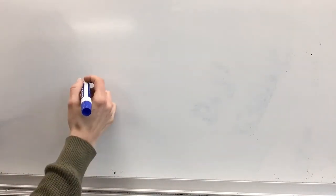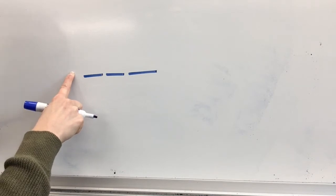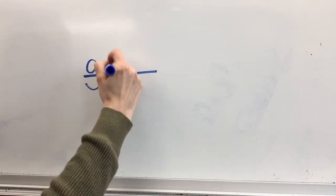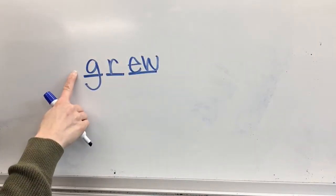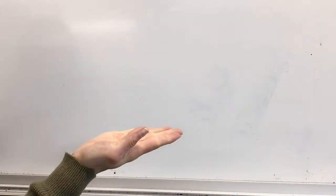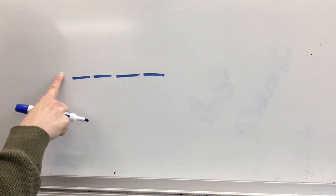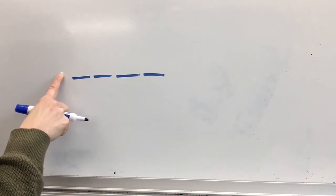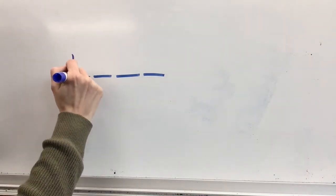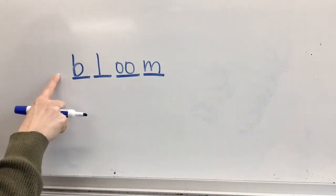Your next word is room. What word? Room. Stretch the sounds you hear in room: r-oo-m. Write your sound spellings for room. Check your word. Spell room: R-O-O-M. Word: room. Yes, room. Your next word is grew. What word? Grew. Stretch the sounds: G-R-EW. Write your sound spellings. Spell grew: G-R-E-W. Word: grew. Yes, grew. Your next word is bloom. Stretch the sounds: B-L-OO-M. Write your sound spellings for bloom. Spell bloom: B-L-O-O-M. Word: bloom. Yes, bloom.